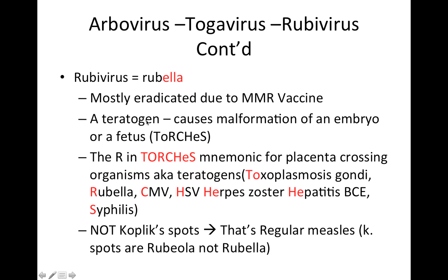Rubella is a teratogen, which means it causes malformation of an embryo or fetus. There's a mnemonic to help remember all of the viral teratogens, and it's TORCHES. The ones that are uppercase are meant to remind you of the name of a microorganism. Rubella is going to be the R in TORCHES, reminding you that this is a placenta-crossing organism.